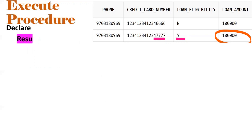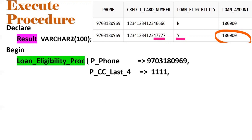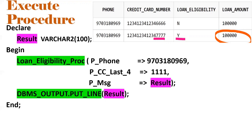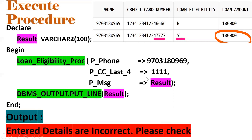One more use case: passing a valid phone number but incorrect last four digits — for example, four ones which don't exist in the table. Since only two records exist and those last four digits don't match, output is 'Entered details are incorrect, please check'. This covers all three scenarios. To solve this requirement, you need understanding of conditional statements, exception handling, and the other listed concepts.